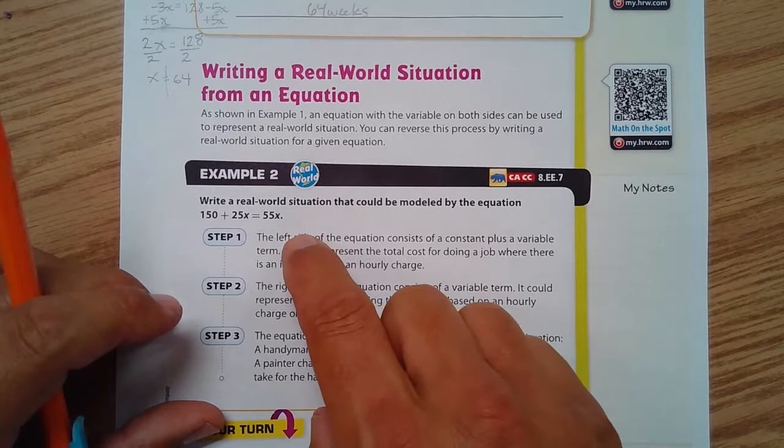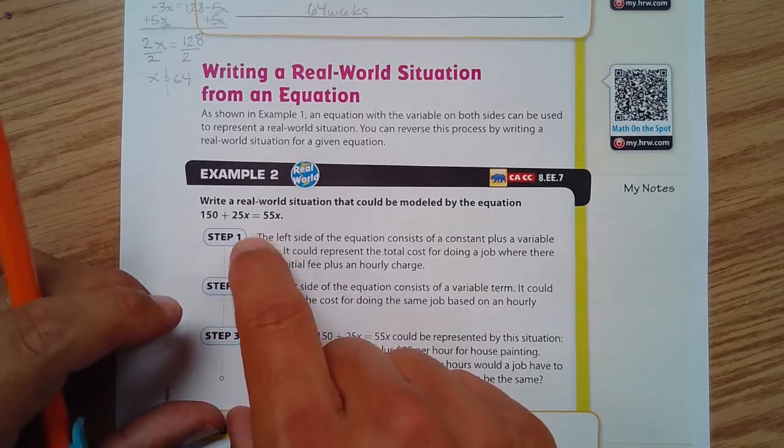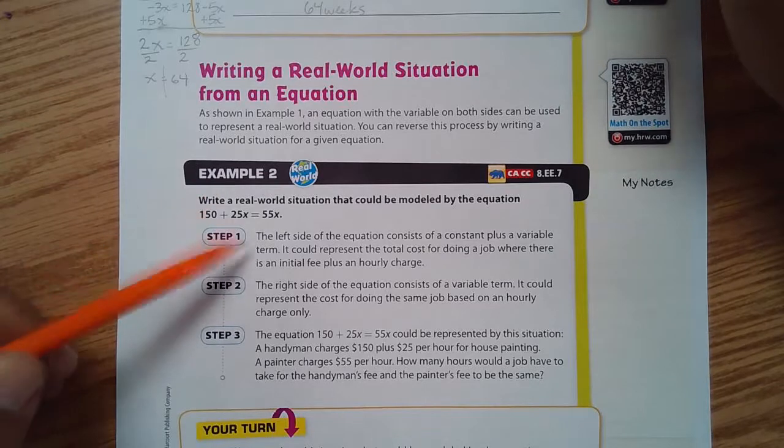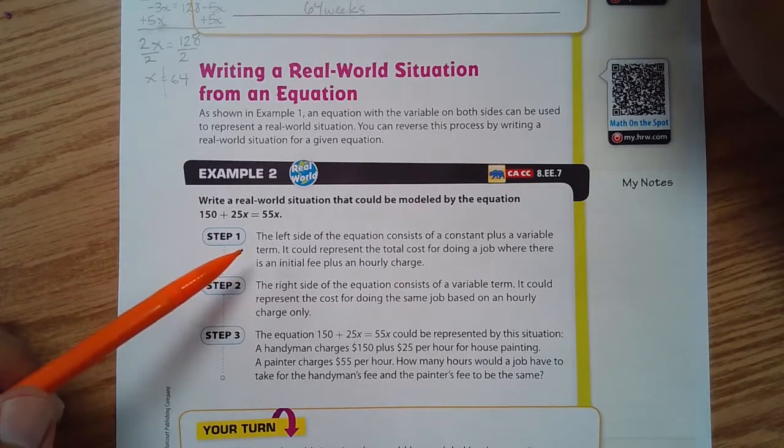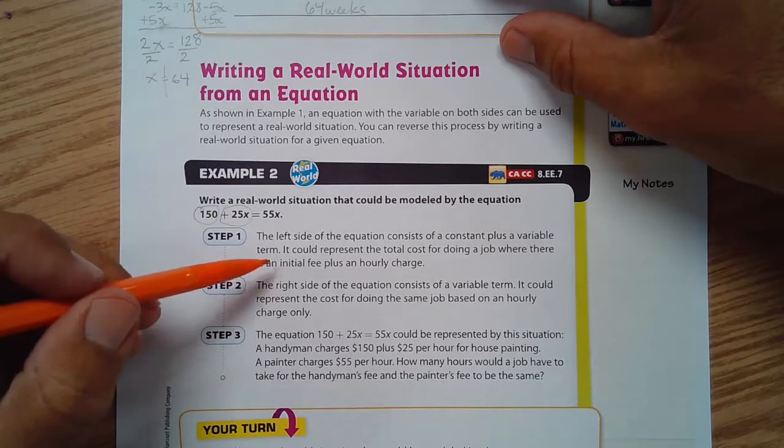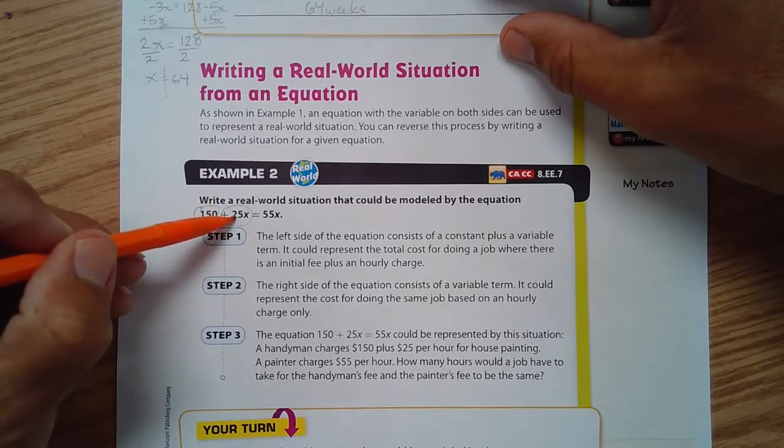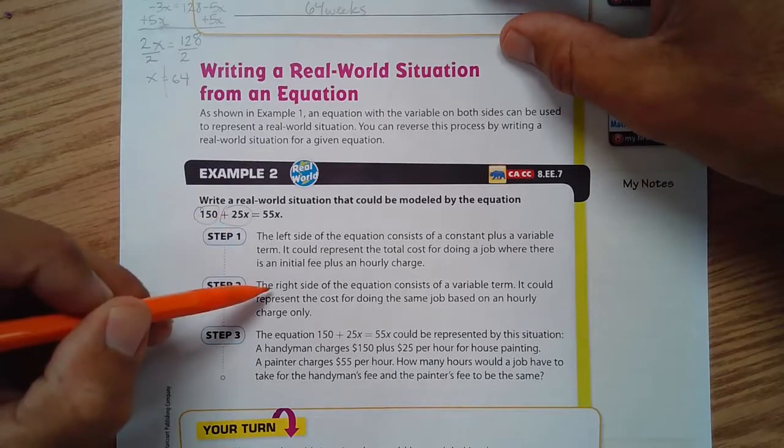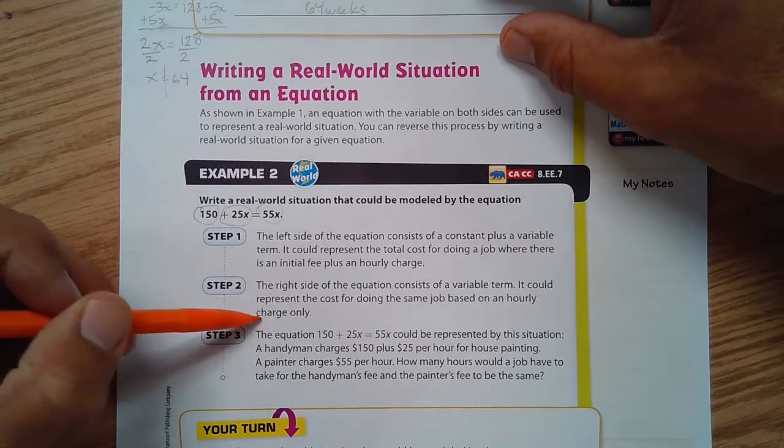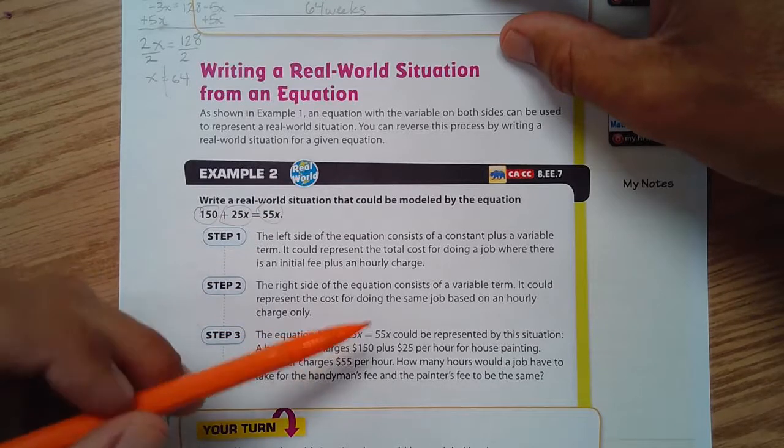Write a real-world situation that could be modeled by the equation 150 plus 25x equals 55x. Our first step: the left side of the equation consists of a constant plus a variable term. It could represent the total cost for doing a job where there's an initial fee and an hourly charge. The right side gives us a variable term—it could represent the cost for doing the same job based on an hourly charge only.